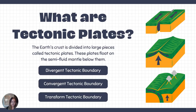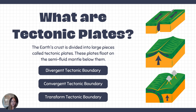So what are tectonic plates? They are portions of Earth's crust, and they interact in a bunch of different ways. They can be pulling apart from each other at divergent plate boundaries, pushing and colliding against each other at convergent plate boundaries, or sliding past each other at transform plate boundaries.